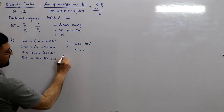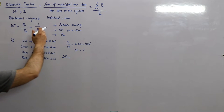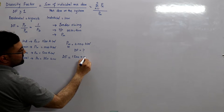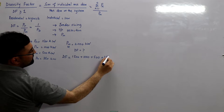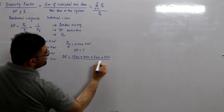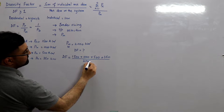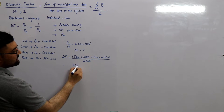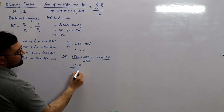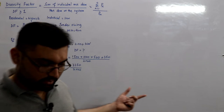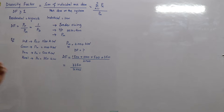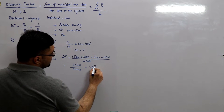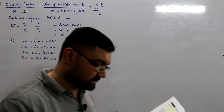From the formula, the diversity factor is the summation of individual maximum demands — 1500 + 1000 + 500 + 350 — divided by the maximum demand of the station, which is 2000. This equals 3350 divided by 2000. As expected, the summation is always greater than the system maximum demand, and this ratio comes out to be 1.67.